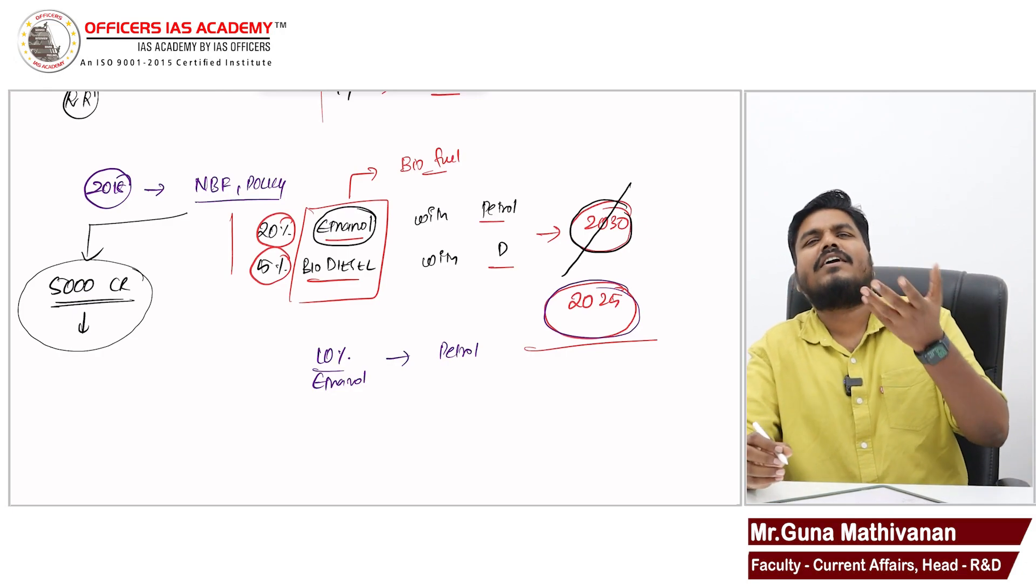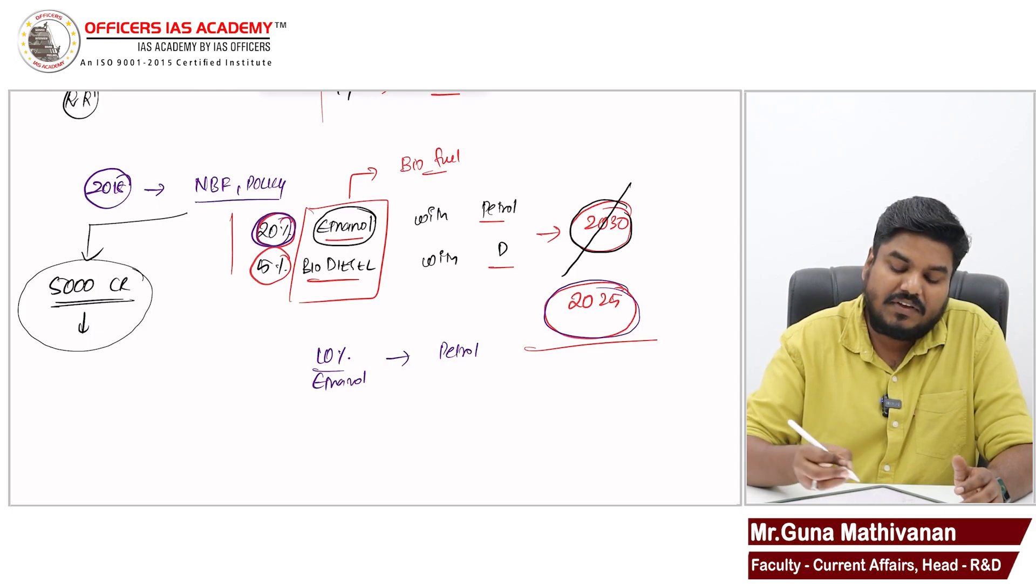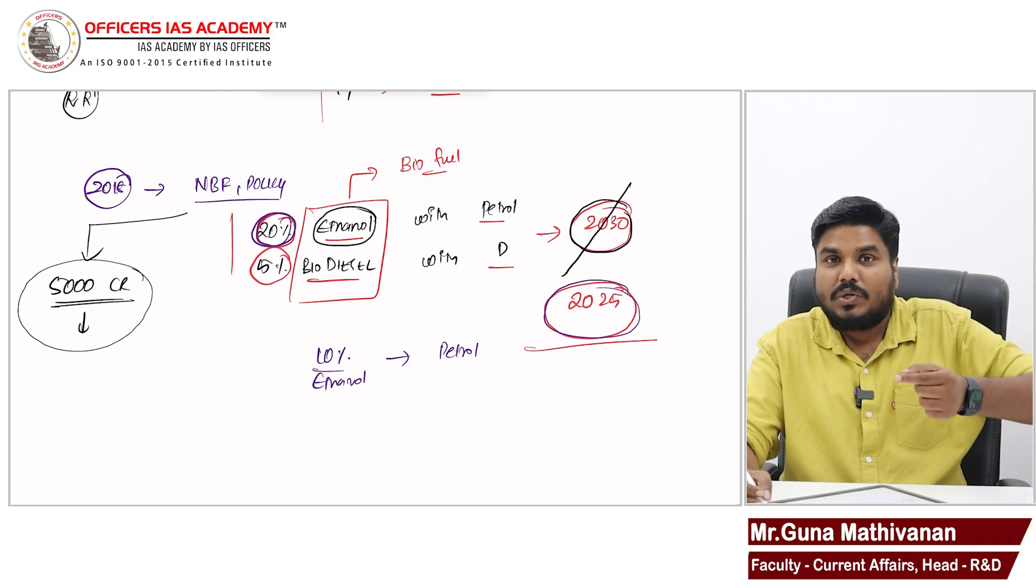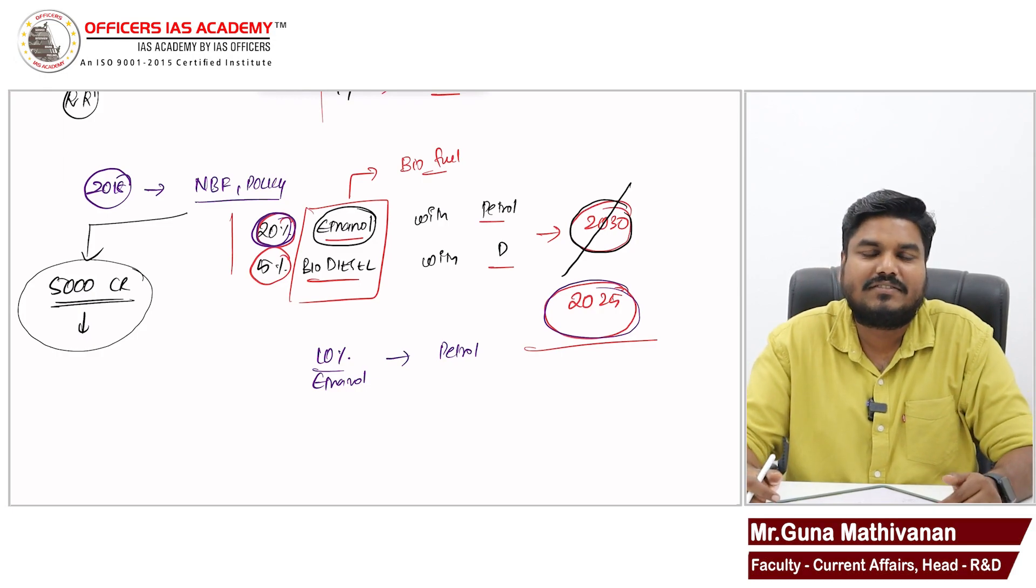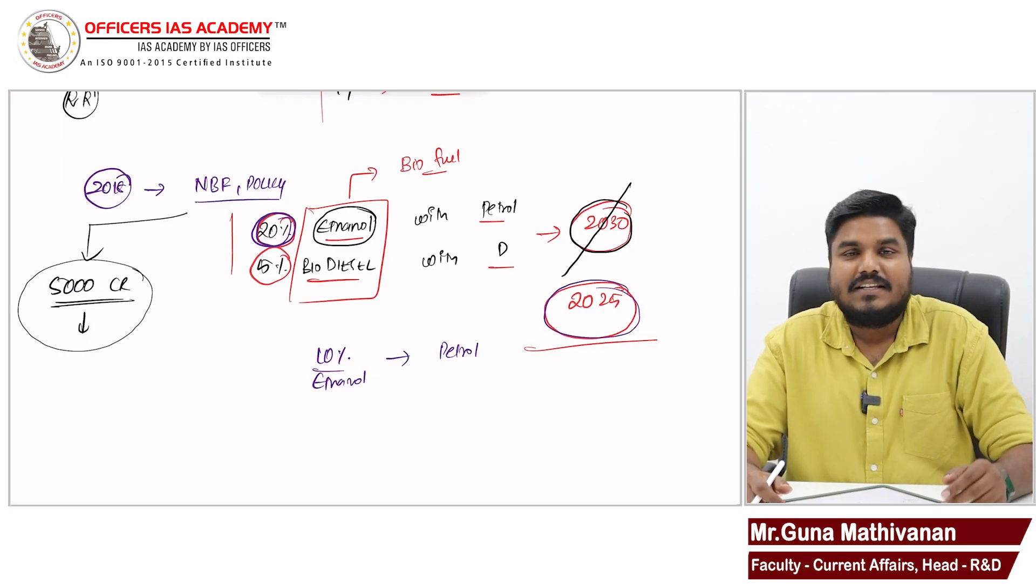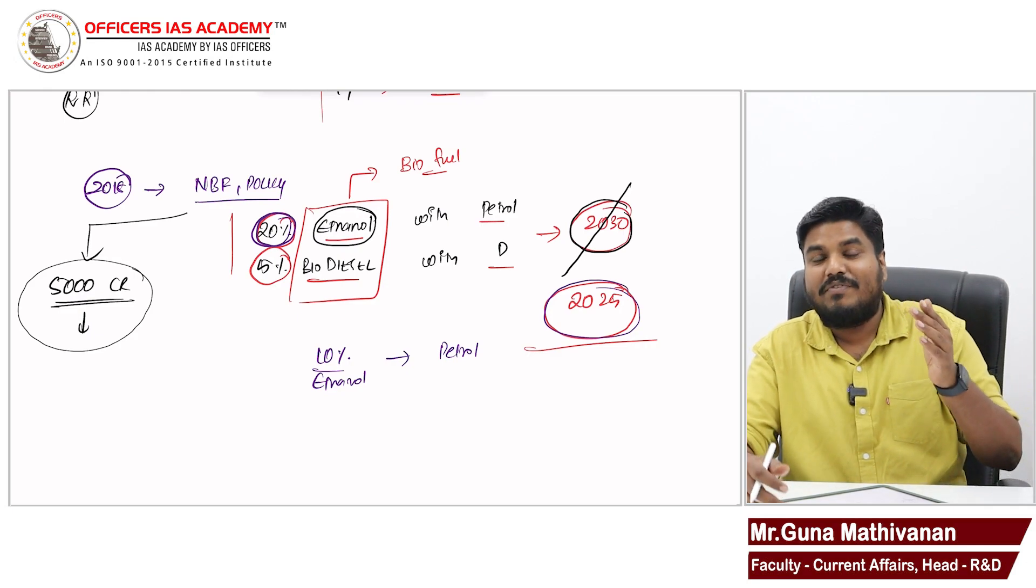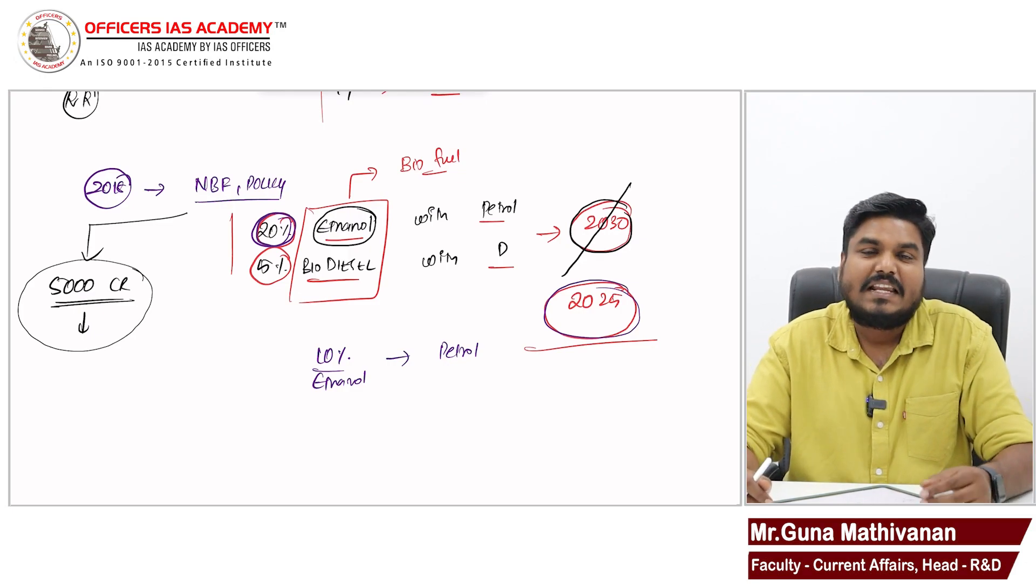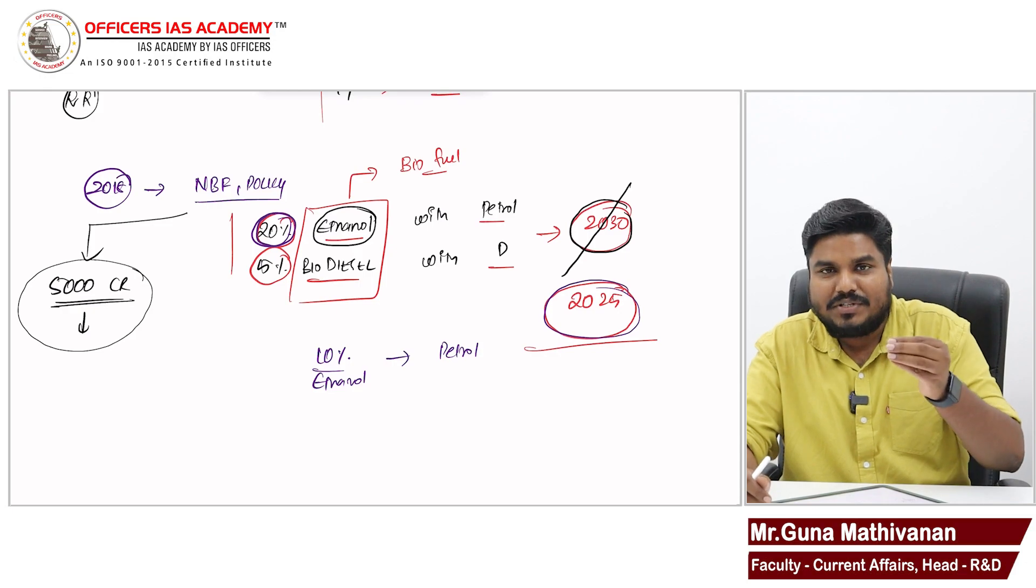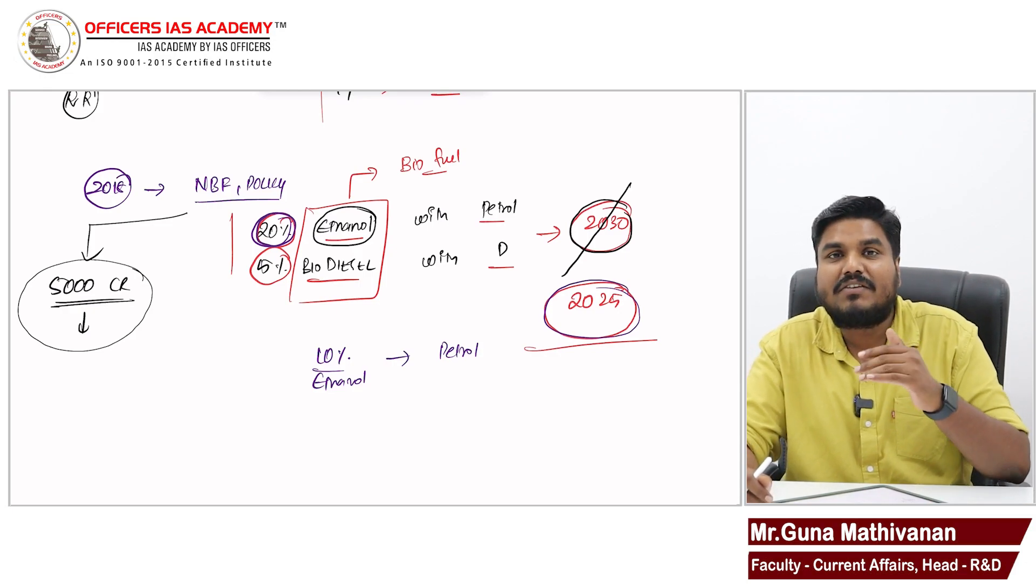See, this biofuel has a lot of advantages, friends. When we are able to blend 20% of ethanol with petrol, then our crude oil imports can be reduced. We can save a lot of our forex reserves. Since these biofuels are produced domestically, the prices will be cheaper. So, very soon, the petrol prices can come down. Relatively cleaner, pollution can come down.